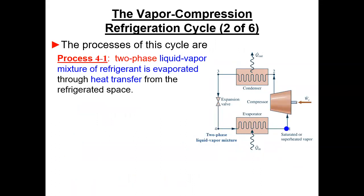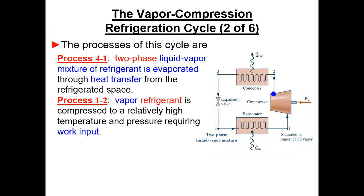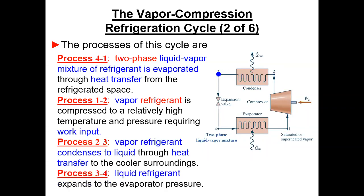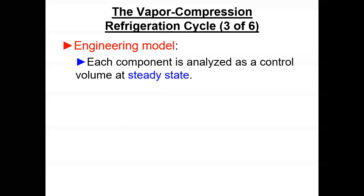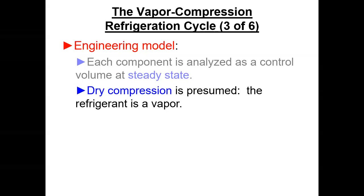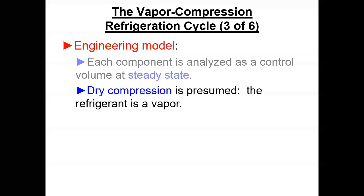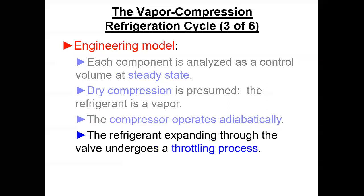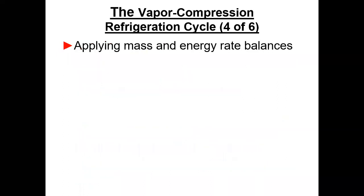He shows all the little processes: the evaporator, the compressor, the condenser, and the expansion valve. We typically do steady-state on this stuff. Dry compression is presumed — we don't want any droplets going into the compressor to tear it up. Some problems might ask you to calculate a heat transfer rate, but generally we assume compressors are adiabatic — well insulated, which is probably not a bad assumption. Through the expansion valve it's throttling, and we typically throw away kinetic and potential energy unless your instructor is really mean that day.